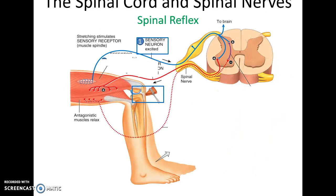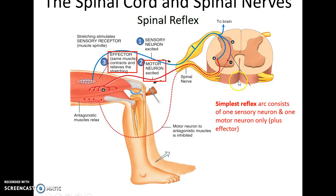Spinal reflexes do not incorporate the brain — they occur automatically when the proper stimulus is generated, without input from the brain. The sensory neuron, excited by a stimulus such as the doctor hitting your patellar ligament, produces a stretch stimulus that sends a signal to the central nervous system. That sensory neuron will also send information to the brain and other structures, but for the spinal reflex, it synapses directly with a motor neuron that automatically activates the appropriate skeletal muscle, causing you to kick your lower leg. This is the simplest reflex arc possible: a sensory neuron, a motor neuron, and the effector.